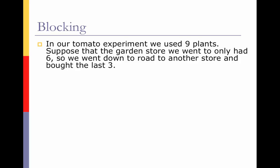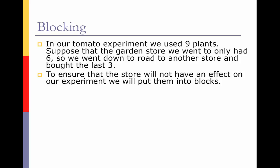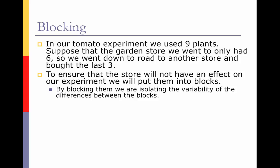In our first video, we talked about growing tomatoes using Opti-Grow to determine if they were juicier and tastier. In that experiment, we used nine different plants. Suppose that the garden store you went to only had six, so you bought those six and then had to go to another store to buy your last three. This is an issue — we have to ensure that the store will not have an effect on our experiment. Perhaps one store is better at taking care of their plants than the other, so one will produce better results. Therefore, we have to block out that variable, making the store that the plants came from the blocking variable. By blocking them, we are isolating the variability of the differences between the blocks, so we can ensure that the store they came from will be evenly distributed instead of only affecting one particular treatment group.